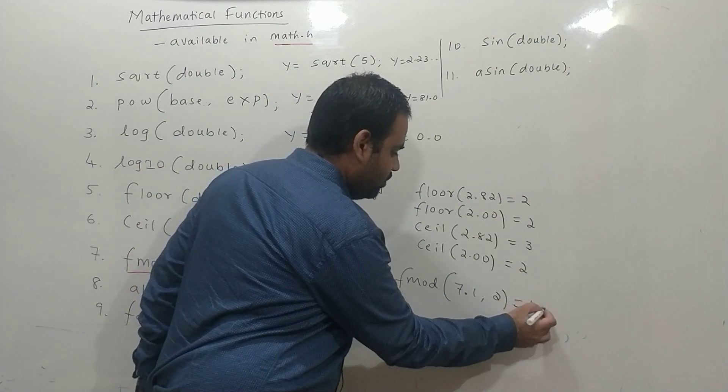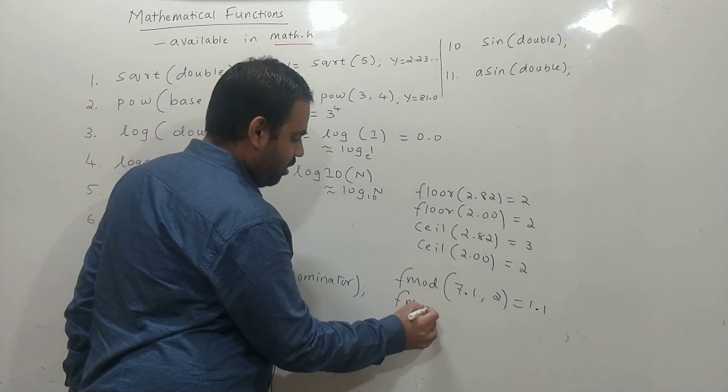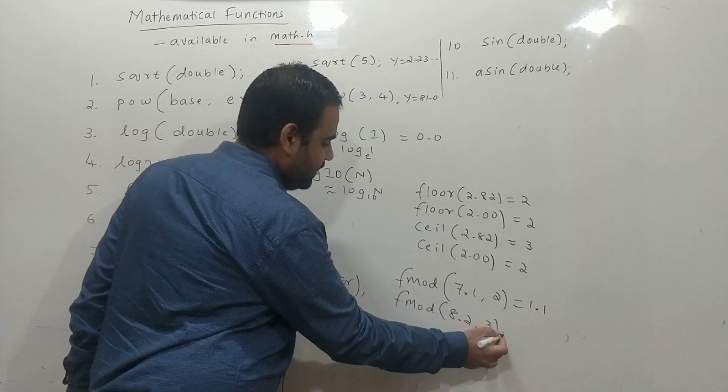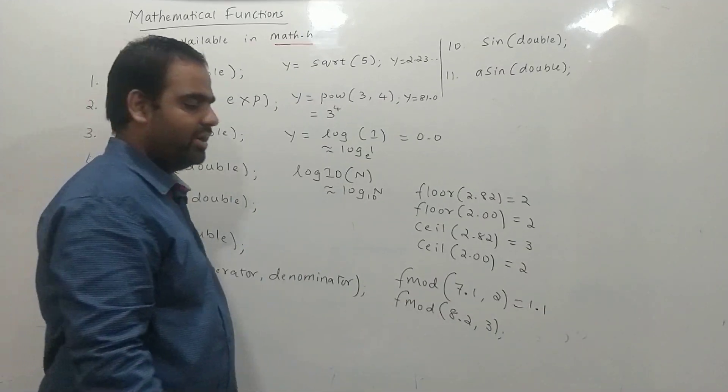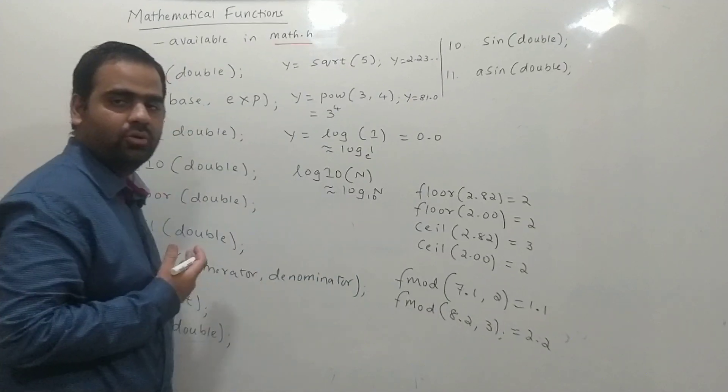If we write fmod of 8.2, 3, we know that 3 twos are 6. The remainder would be 2.2. Hence, we get the answer as 2.2. This is fmod.